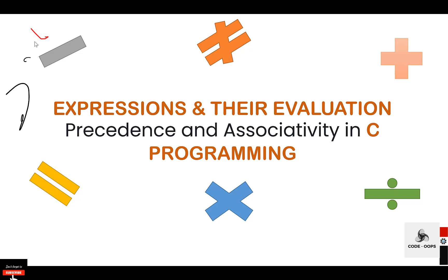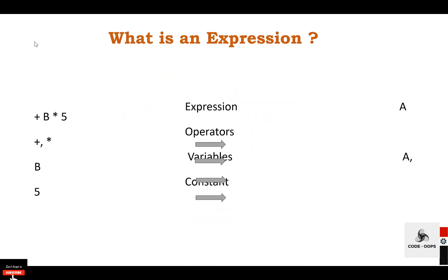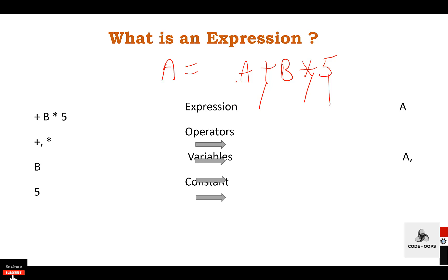In this video we will discuss expressions, their evaluation, and precedence and associativity of operators in C programming. An expression is the combination of operators, constants, and variables. An expression may consist of one or more operands and zero or more operators to produce a value. For example, a + b * 5, where plus and multiply are operators, a and b are variables, and 5 is a constant.